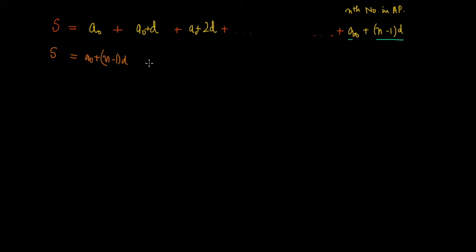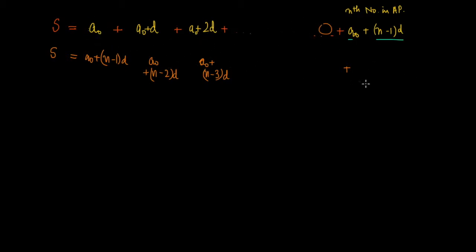Writing in reverse: the nth term is a₀ + (n−1)D, then the (n−1)th term is a₀ + (n−2)D, then a₀ + (n−3)D, and so on, until the last written term is simply a₀. We're writing the same sum but in reverse order, just changing the order in which we write the terms.